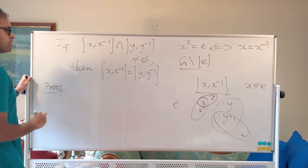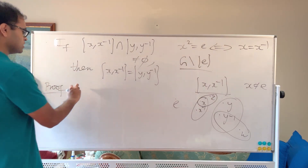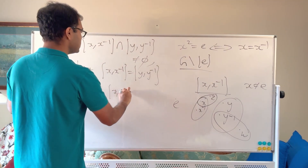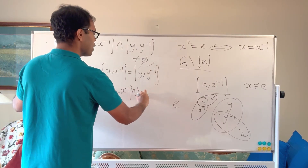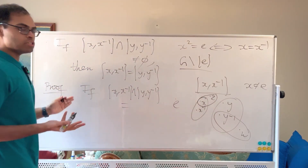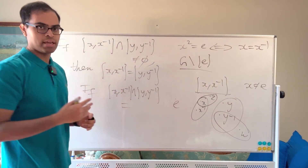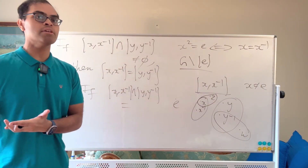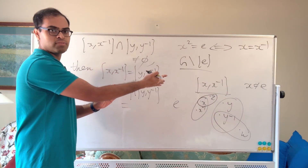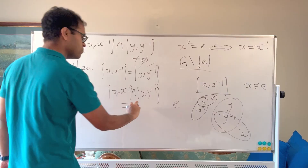You can think of this as a subclaim in the proof. If the intersection of {x, x⁻¹} and {y, y⁻¹} is non-empty, it's going to have one element. If it had two elements, the intersection would be a subset of both, so both sets would have to be equal. So we assume it has exactly one element.